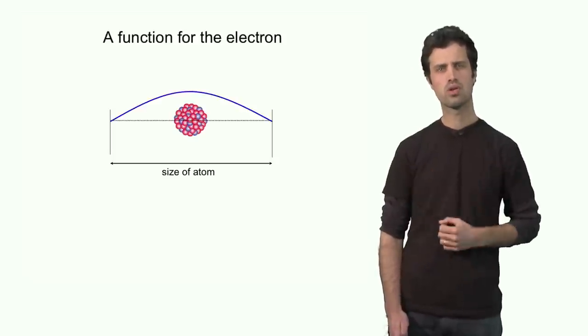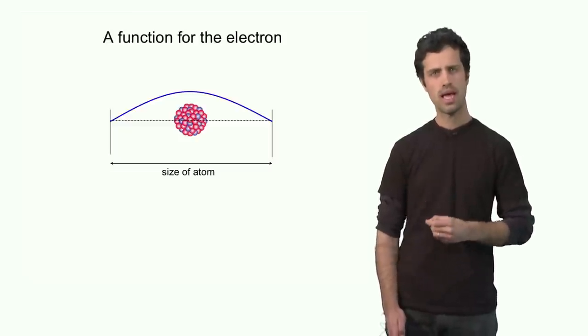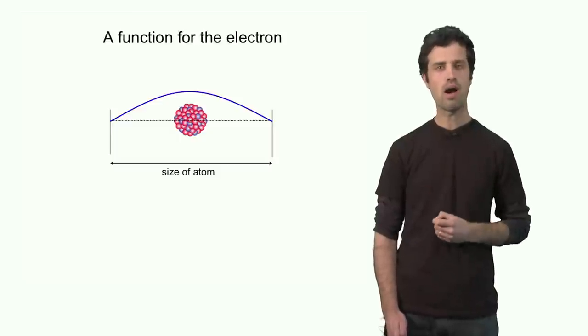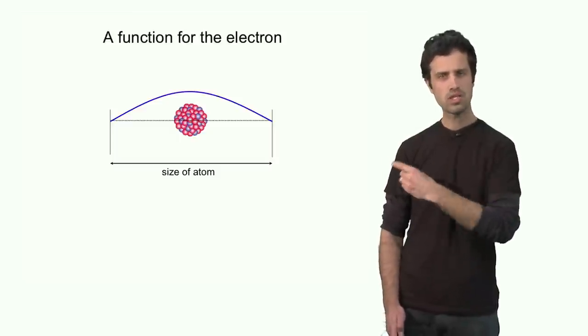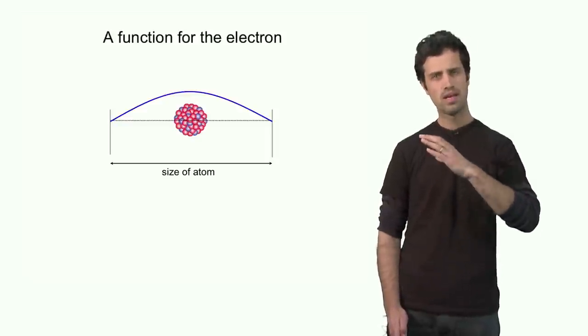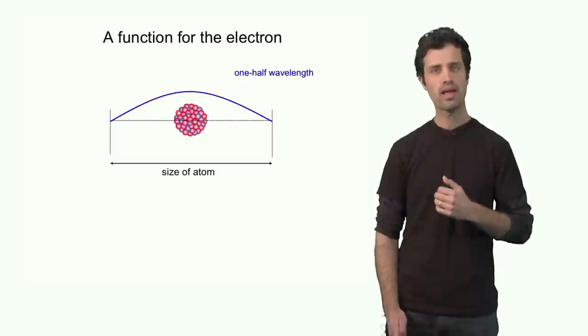Now here is a solution. This function is smooth and continuous and disappears at the edges. It is not defined outside of the boundary. This is a good description of the electron. It looks like half of a wave or one half wavelength.